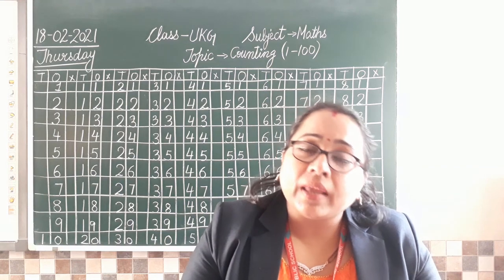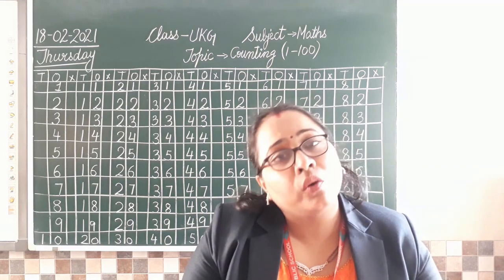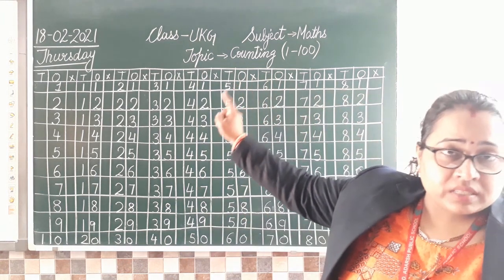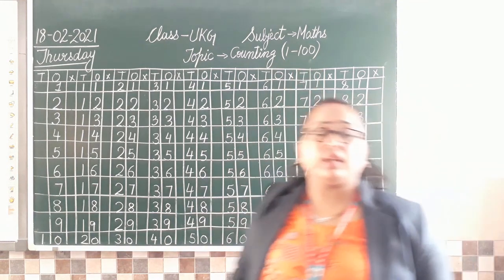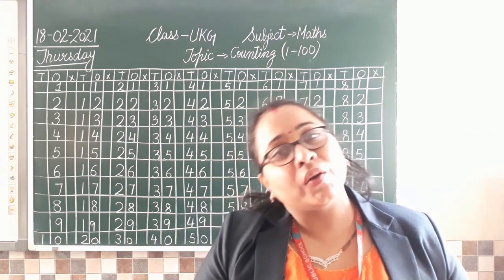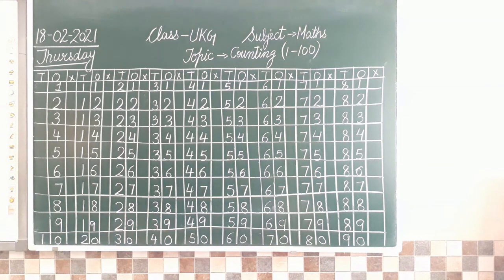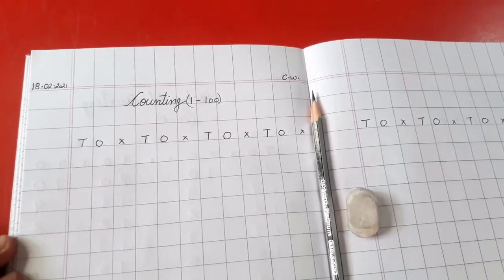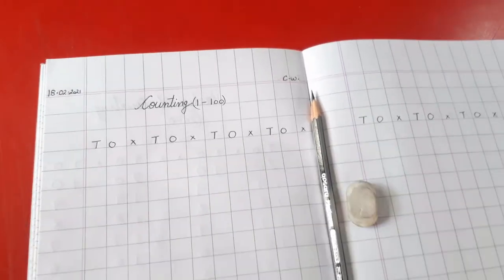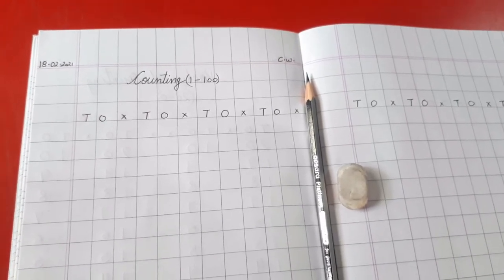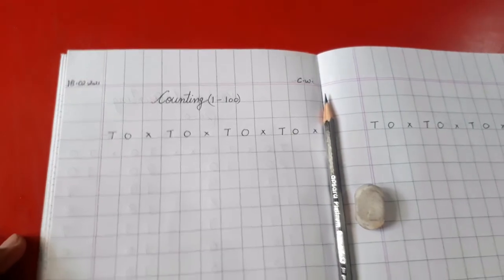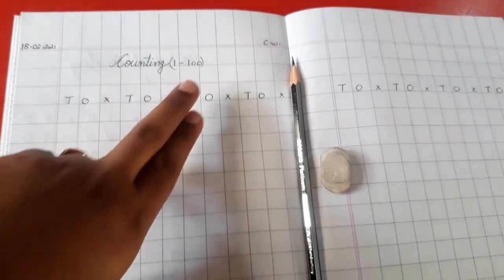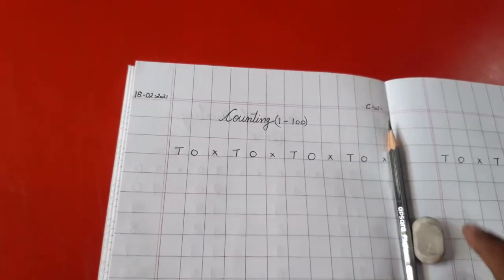Oral counting, why do we practice it? Because whenever we have to do any concept like missing numbers, what comes after, before, between, in doing all these concepts you have to know your counting orally, so you'll speak and you'll be able to recollect it. Please don't forget to practice your counting orally also, it is equally very important. Now class, open your notebooks and I'll show you how you have to do your work in notebook.